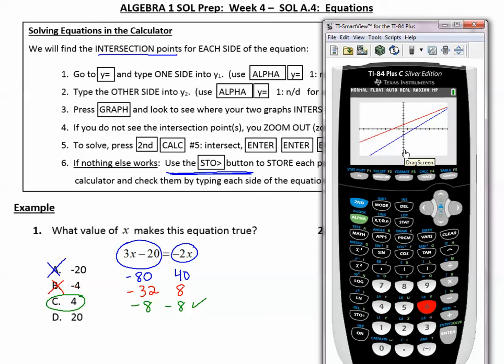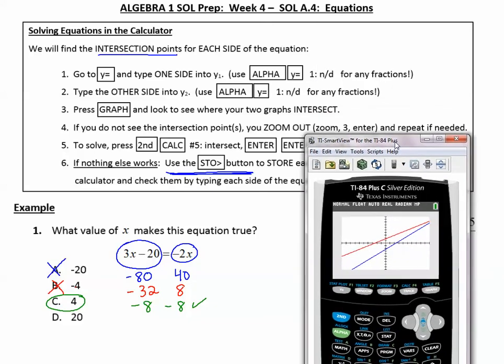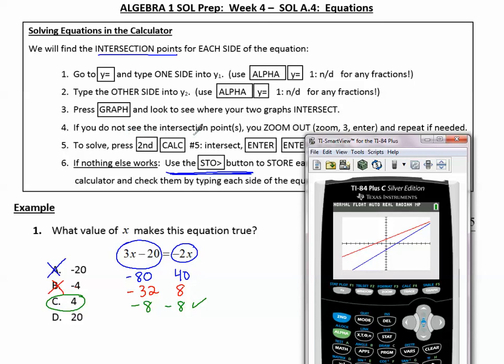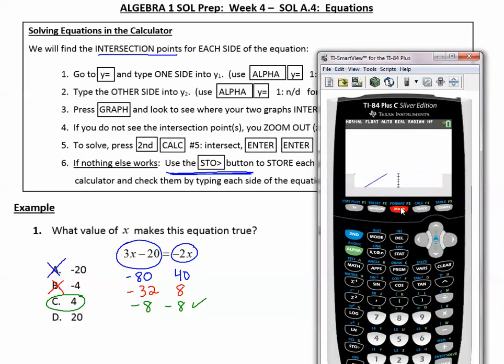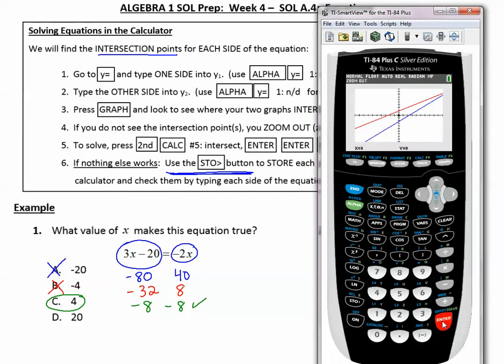But I don't see where they intersect. So let's look at the next step. If you do not see the intersection point, you zoom out. Zoom 3, enter, and repeat if needed. So let's press zoom 3, enter. I see it graphing it again, and it looks like it has zoomed out. And now I do see where they intersect.